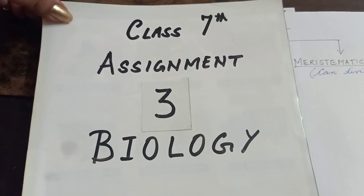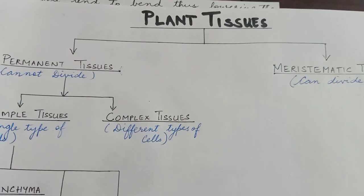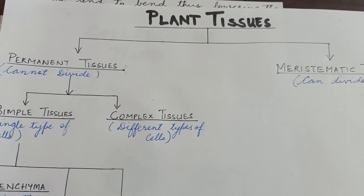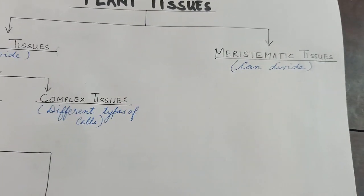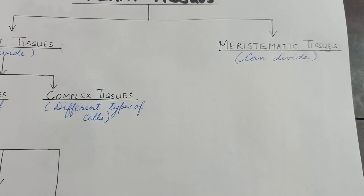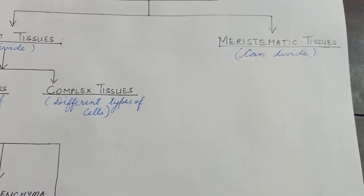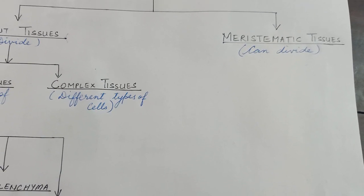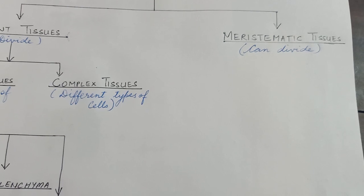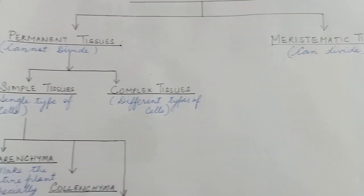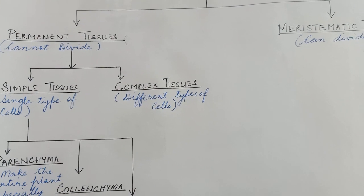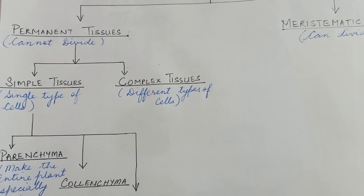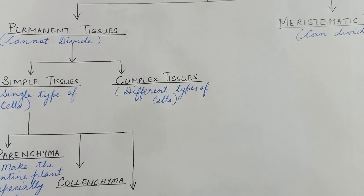We are studying about the plant tissues, and this plant tissue is of two types: one is permanent tissue and the other one is meristematic tissue. Meristematic tissue we have already studied in the first assignment — this type of tissue can divide easily. Now we are studying about the permanent tissues, which are a kind of tissue that cannot divide.